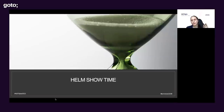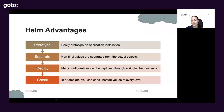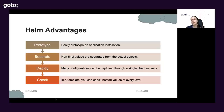Looking at what Helm brought us: it gives us advantages in that we can easily prototype how we are going to install an application with just a few commands. Then we can separate the non-final values from the actual objects, so we don't have hard-coded things in the actual charts. When you look at the charts, you'll see some plain strings are still available. If a specific value is not going to change throughout your deployment cycle across different environments, you can keep it there. But good practice is to have values you feel will change over time separated from the actual object definition.